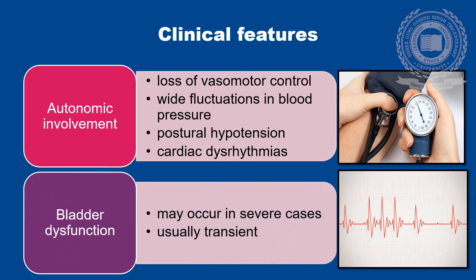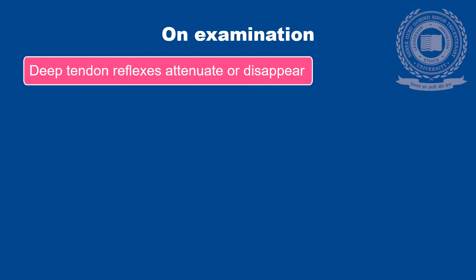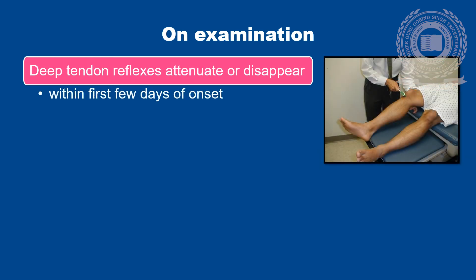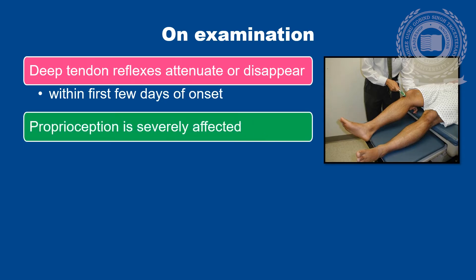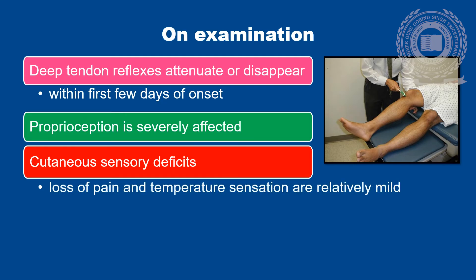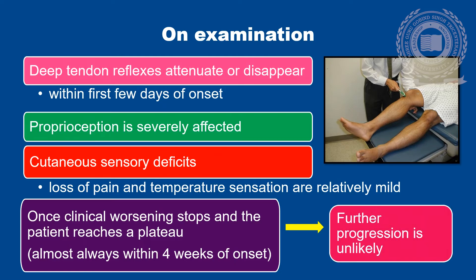Bladder dysfunction is also present in severe cases, but usually it is transient. On examination, deep tendon reflexes attenuate or disappear within the first few days of onset of the disease. Proprioception is severely affected. Cutaneous sensory deficits like loss of pain and temperature sensation are relatively mild. Once clinical worsening stops and the patient reaches a plateau, which is almost always within 4 weeks of onset, further progression is unlikely.